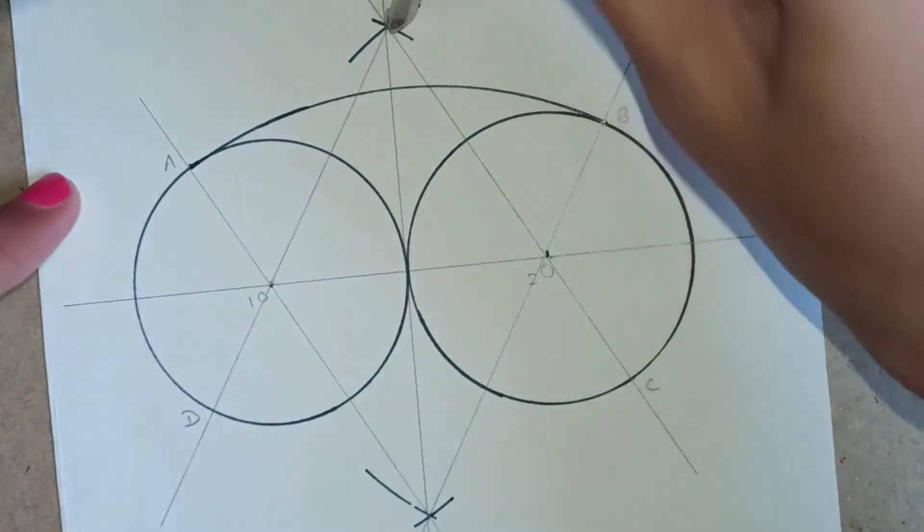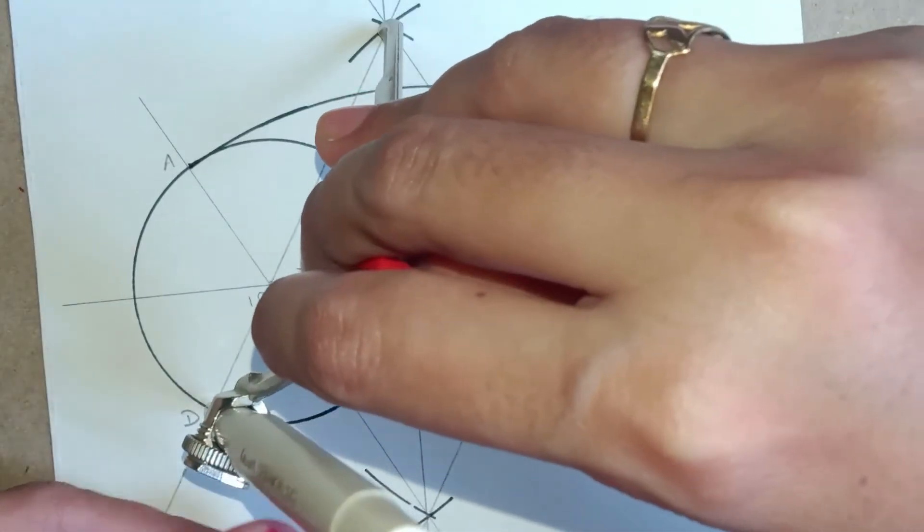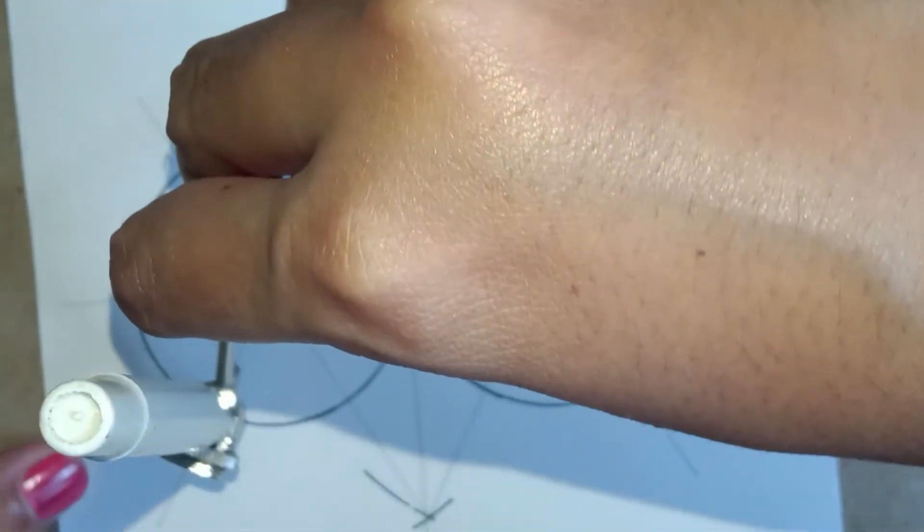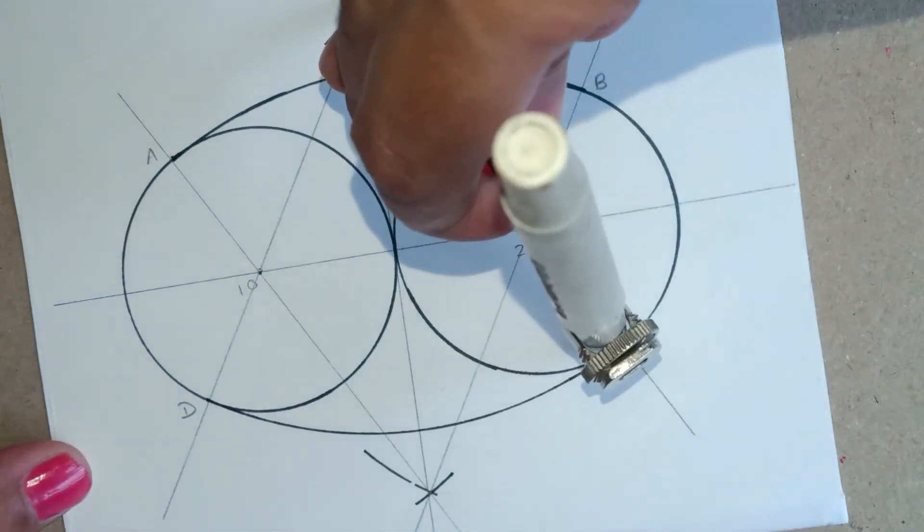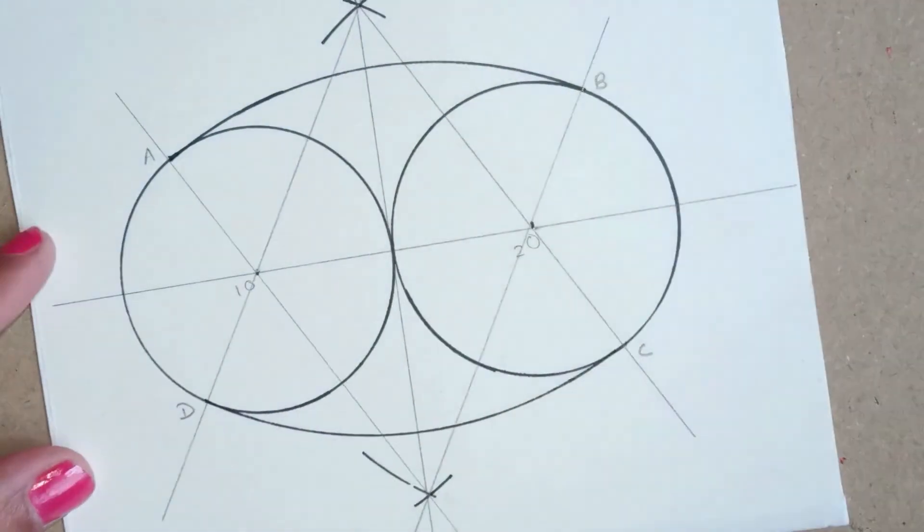Similarly, from the upside arc, we will measure the distance till D and intersect the arc till it touches the point C.